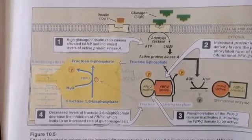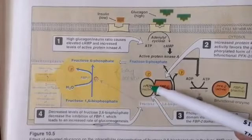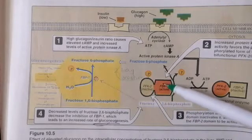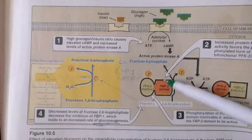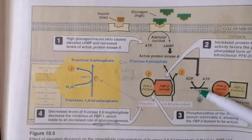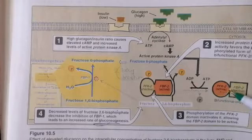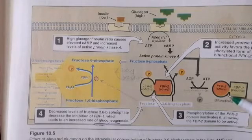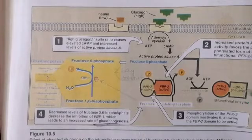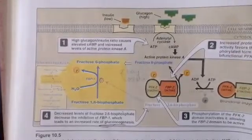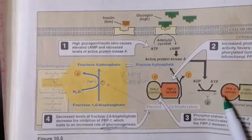Protein kinase A acts on the bifunctional enzyme, which has two activities: phosphofructokinase 2 (PFK-2) and fructose 2,6-bisphosphatase. In the phosphorylated form, PFK-2 is inactivated and fructose 2,6-bisphosphatase is activated. However, through the action of protein kinase A, dephosphorylation of this bifunctional enzyme causes PFK-2 to become activated and fructose 2,6-bisphosphatase to become inactivated.